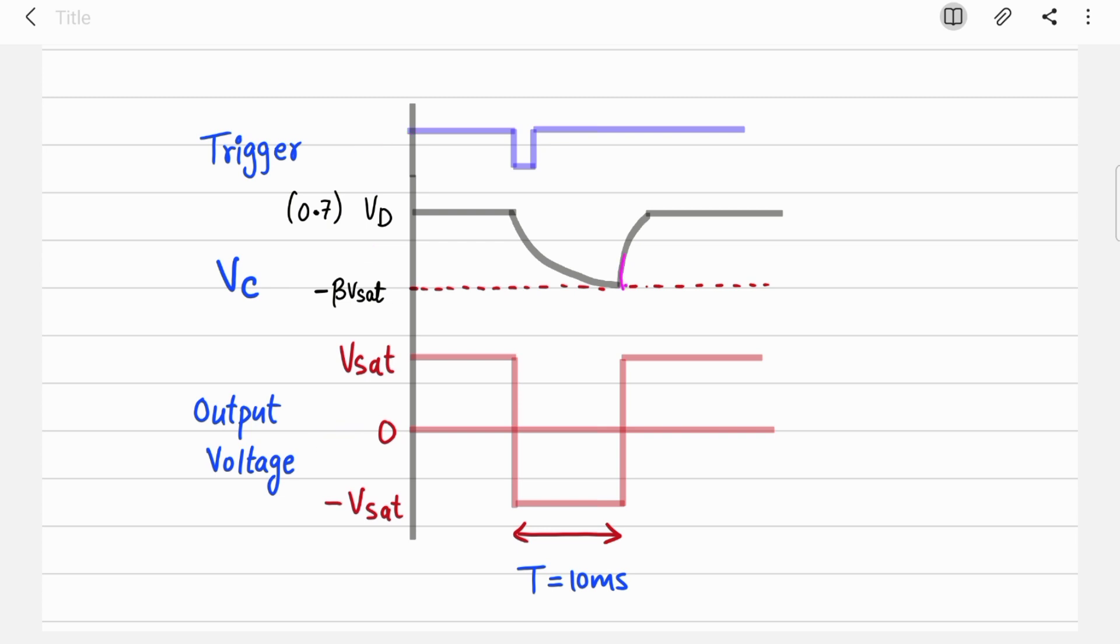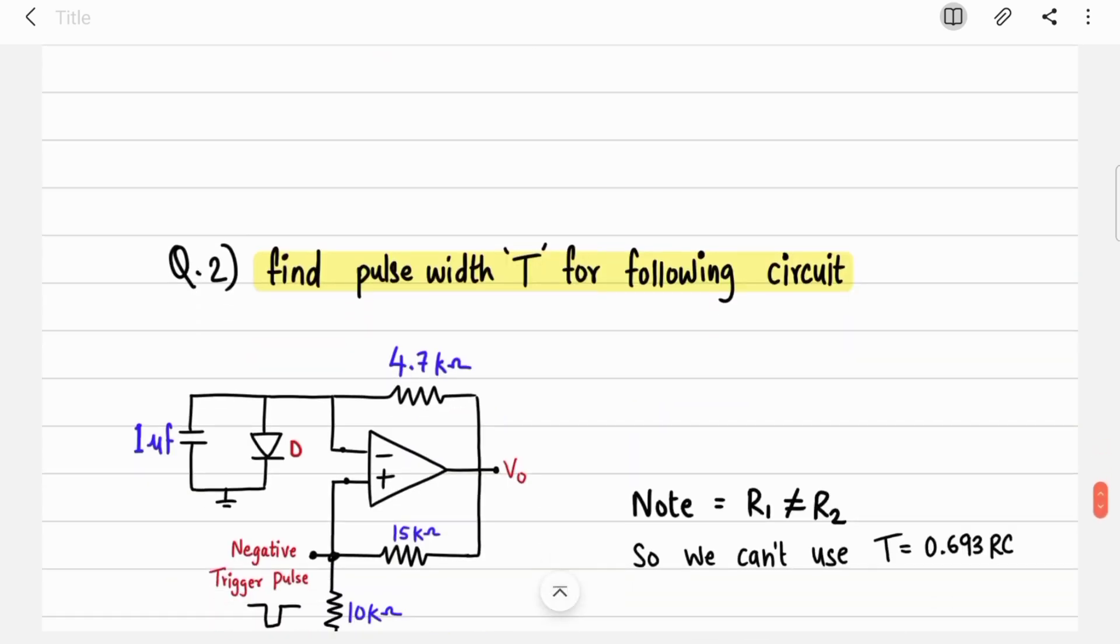Practically your capacitor takes some recovery time to go to 0.7 again. Ideally it was like this, but practically it takes some time, that's why it is curved. So this is the pulse you got. With calculated RC, R1, and R2 you will get 10 milliseconds of output pulse.